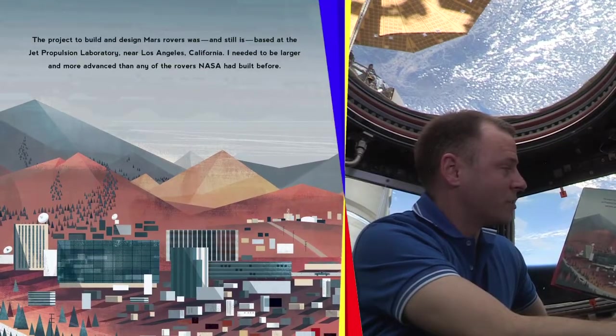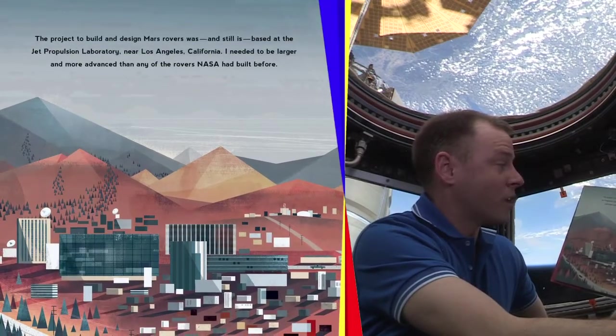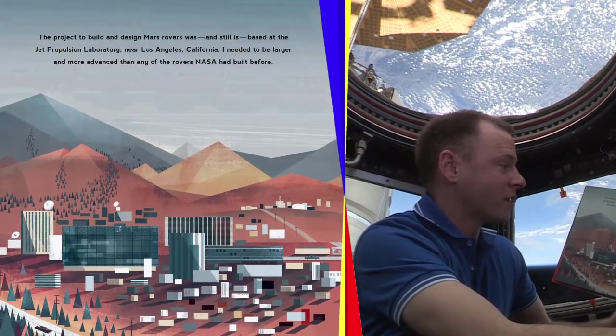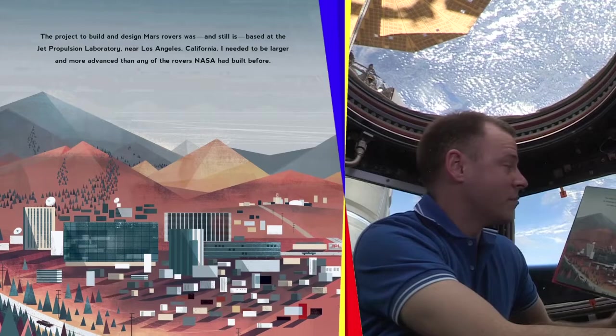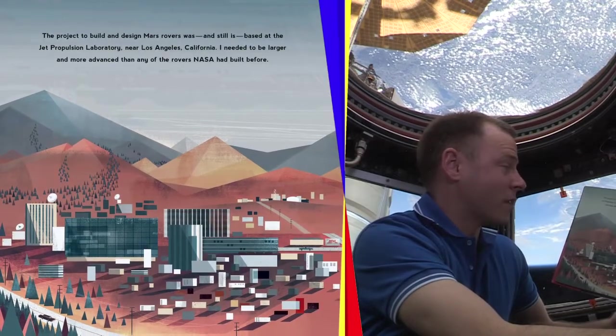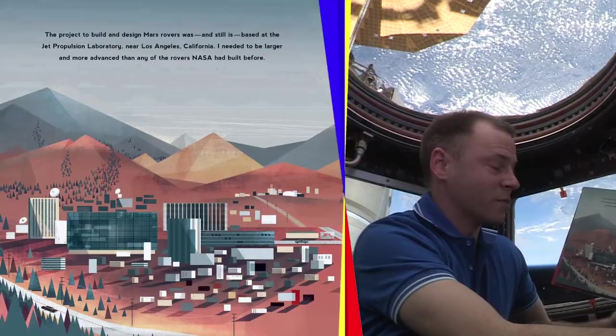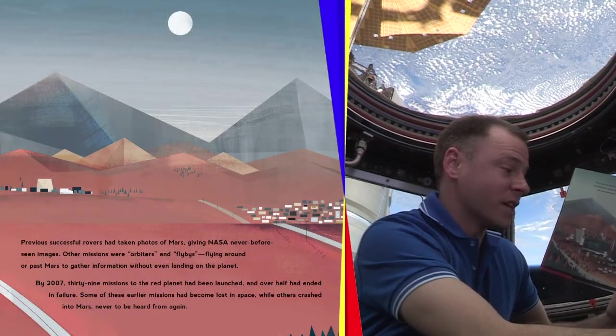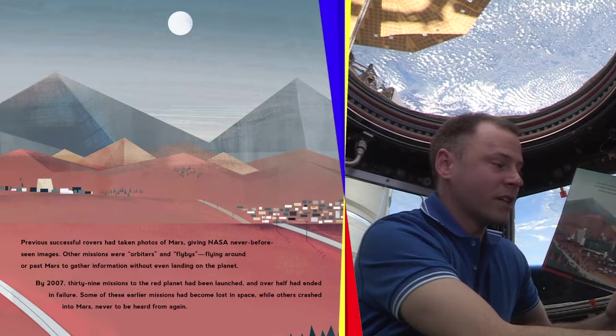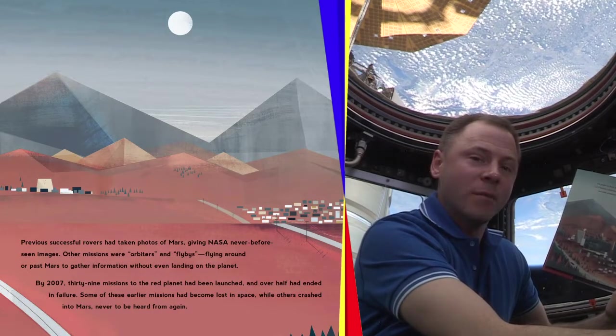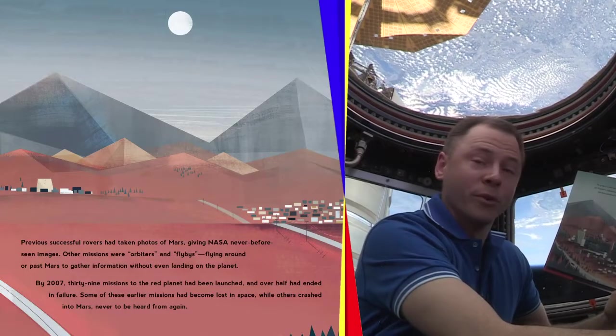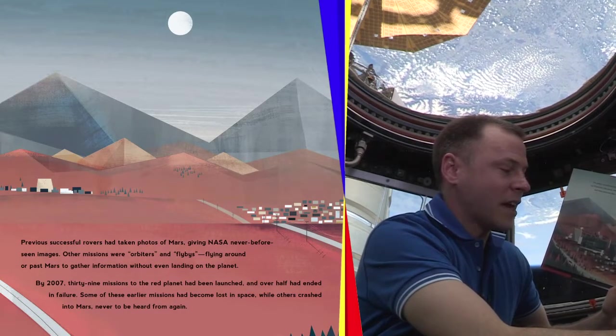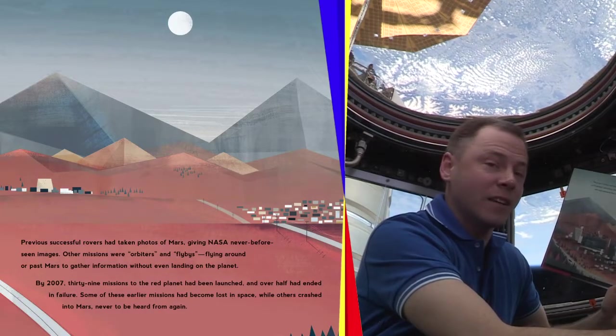The project to build and design Mars rovers was and still is based at the Jet Propulsion Laboratory near Los Angeles, California. I need to be larger and more advanced than any of the other rovers NASA has built before. Previous successful rovers have taken photographs of Mars, giving NASA never-before-seen images. Other missions were orbiters or flybys, flying around or past Mars to gather information without even landing on the planet.